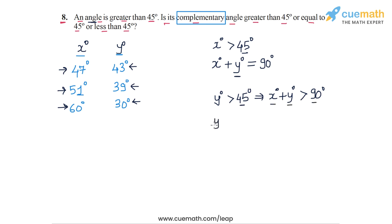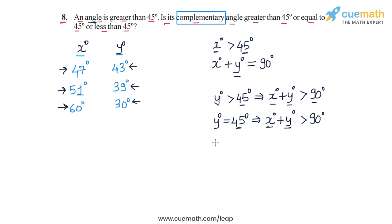Similarly, even if y is equal to 45 degrees, the sum of x and y will still become greater than 90 degrees, because x is greater than 45 and y is equal to 45. So the sum will still be greater than 90 degrees. It's only when y is less than 45 degrees that x plus y equal to 90 is possible.